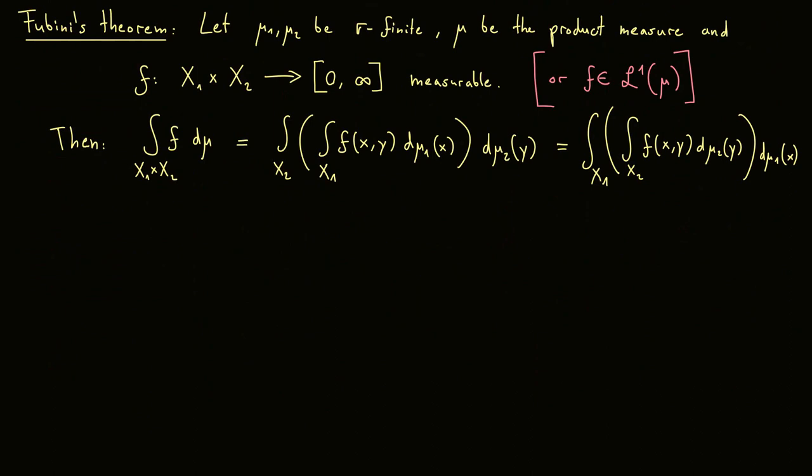Naturally, I now want to give you an application and an easy example for Fubini's theorem. Here I want mu to be the two-dimensional Lebesgue measure, which means it's the product measure of two one-dimensional Lebesgue measures. Now what we want to calculate is a two-dimensional integral for a set A and a function f.